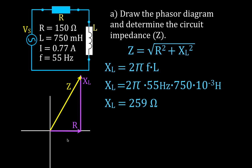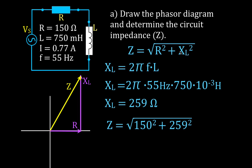We have a right triangle here, so the impedance is the hypotenuse. We use the Pythagorean theorem — A squared plus B squared equals C squared — take the square root of both sides, and get Z equals the square root of R squared plus XL squared. Plugging in values: Z equals the square root of 150 squared plus 259 squared, giving us an impedance of 300 ohms. This is the impedance triangle.